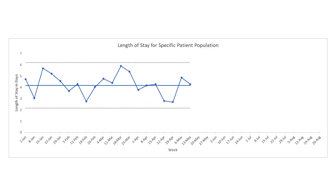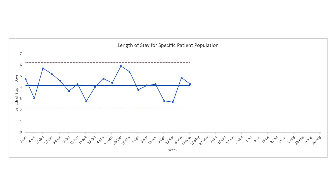Now let's practice everything we learned with another common healthcare project: reducing length of stay. Here's a run chart showing the length of stay for 12 weeks for a specific patient population. You've calculated the average as shown, and you've also calculated control limits indicated by the dashed lines — now your run chart is a control chart. The voice of the process is saying you have an average length of stay of 4.2 days, and that common cause variation will be between 2 and 6 days as indicated by the control limits.